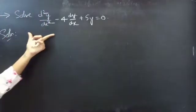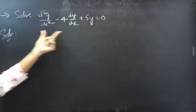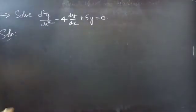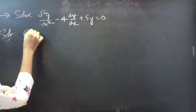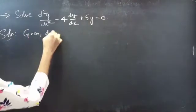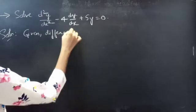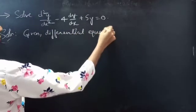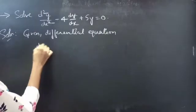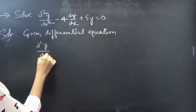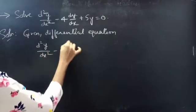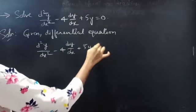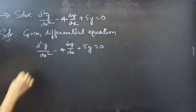Problem: solve d squared y by dx squared minus 4 into dy by dx plus 5y equals to 0. Given differential equation: d squared y by dx squared minus 4 into dy by dx plus 5y equals to 0.